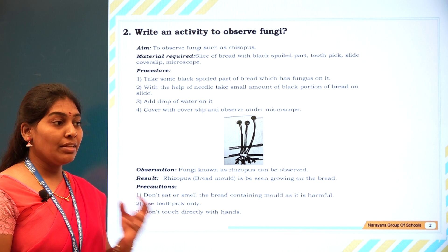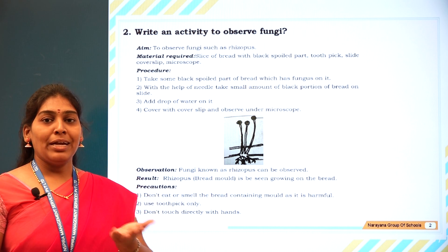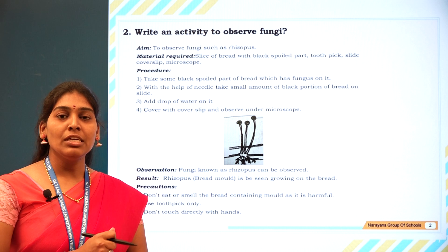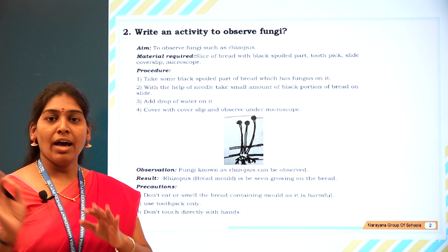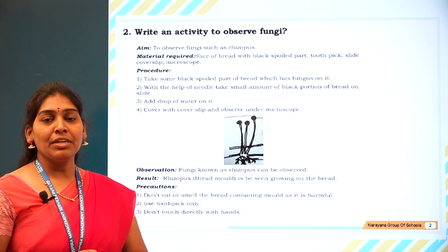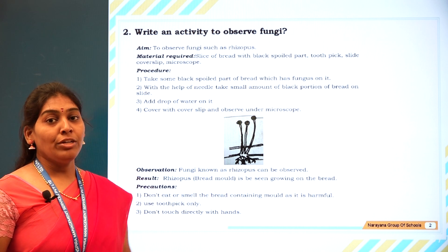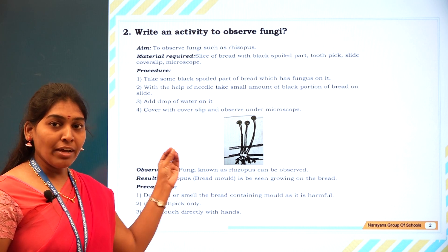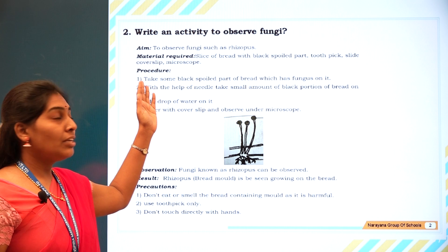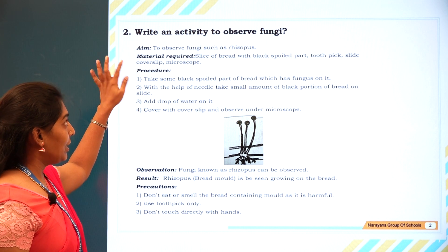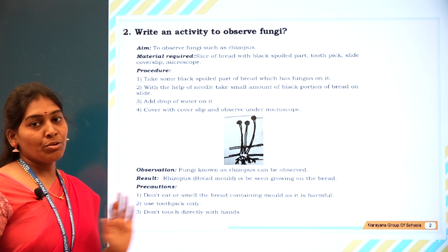To grow bread mold, take a piece of bread, sprinkle water on it, put it in a zip polythene bag, and place it in a dark place. After a few days, you will find some black powdery substances on the bread — that is the fungi. Every activity consists of aim, materials required, procedure, observation, result, and precautions.